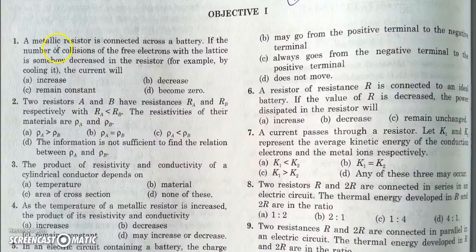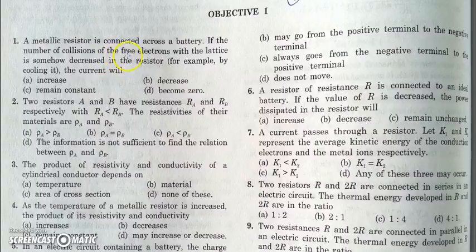The first question says if a metallic conductor is connected across a battery and the number of collisions of free electrons with the lattice is decreased — this can be done by decreasing the temperature — the resistance will decrease and the current will increase. So the answer should be A.